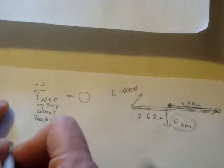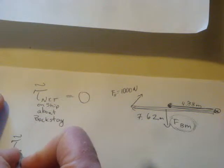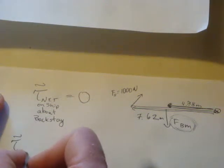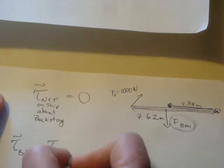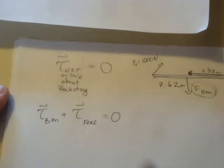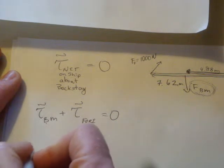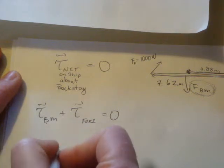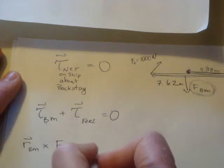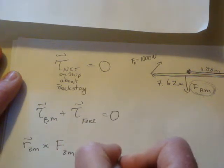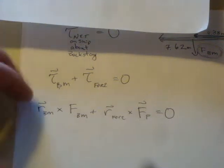We can write this out. We're going to have the torque on the boat by the mast plus the torque of the forestay, and that's going to equal zero. The torque on the boat by the mast equals R_BM cross F_BM, plus R of the forestay cross the force of the forestay. I'm trying to write this out as explicitly as possible to make this clear.